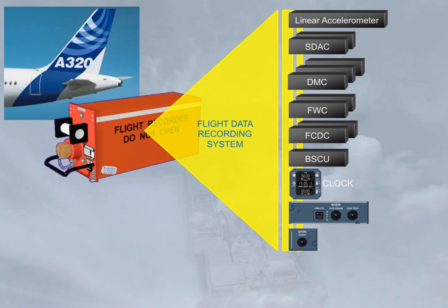Recording is started automatically on ground for 5 minutes after AC electrical power is on. Then, after the first engine has been started, it will stop automatically 5 minutes after the second engine shuts down on ground. It can be manually started with the ground control push button installed on the RCDR panel.